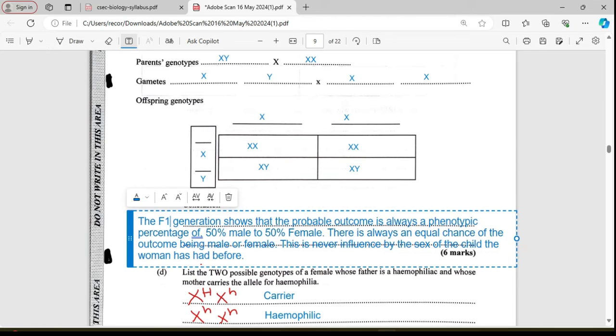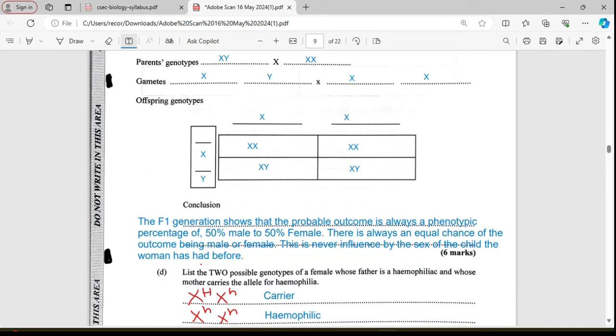It's important to note here that the XX represents a female and the XY represents a male. If you observe, the probability here is that we'll have two female and two male, which results in a 50-50% chance or a one-to-one ratio. So the F1 generation shows that the probable outcome is always a phenotypic percentage of 50% male to 50% female. Please always remember to write the phenotype beside your percentage or your ratio or your fraction. Don't just put 50-50. Make sure you do 50% male to 50% female. That shows that you pretty much understand what you're doing.